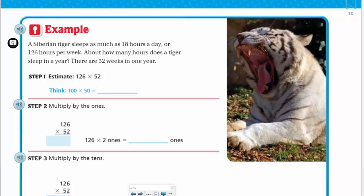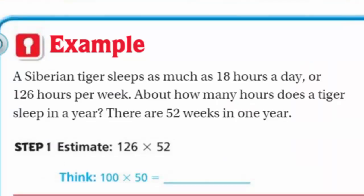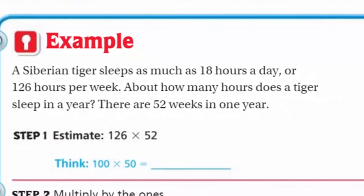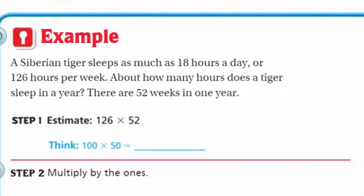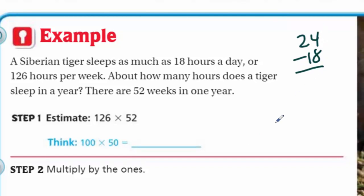Look at that Siberian tiger! It says a Siberian tiger sleeps as much as 18 hours a day, or 126 hours per week. About how many hours does a tiger sleep in a year? There are 52 weeks in one year. 18 hours a day — that means only 6 hours awake. That's a lot of sleep! Step one says we need to estimate. We take 126 hours per week times 52 weeks per year. We round 126 down to 100 and 52 down to 50, so our actual answer should be a little bit larger than our estimated answer.